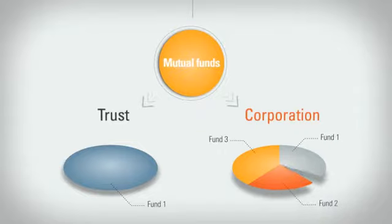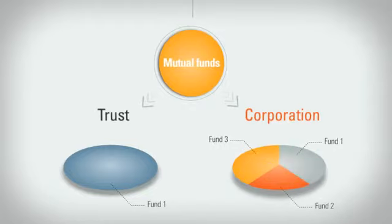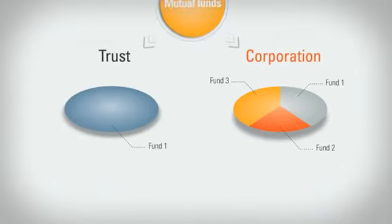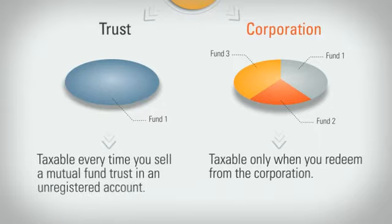This enables you to switch or rebalance among funds while staying inside the Corporate Class structure. And as long as you stay in Corporate Class, your fund switches don't trigger capital gains or losses. Generally, a taxable capital gain or loss occurs only when you redeem from the corporation. By comparison, every time you sell a mutual fund trust in an unregistered account, you create a taxable event.